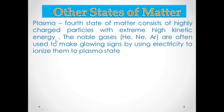We can also produce plasma by ionizing noble gases at extremely high temperatures so they acquire high kinetic energy. The glowing of noble gases through electricity is one way to ionize them and produce plasma. Examples of noble gases that can be ionized to produce plasma include helium, neon, argon, and krypton.